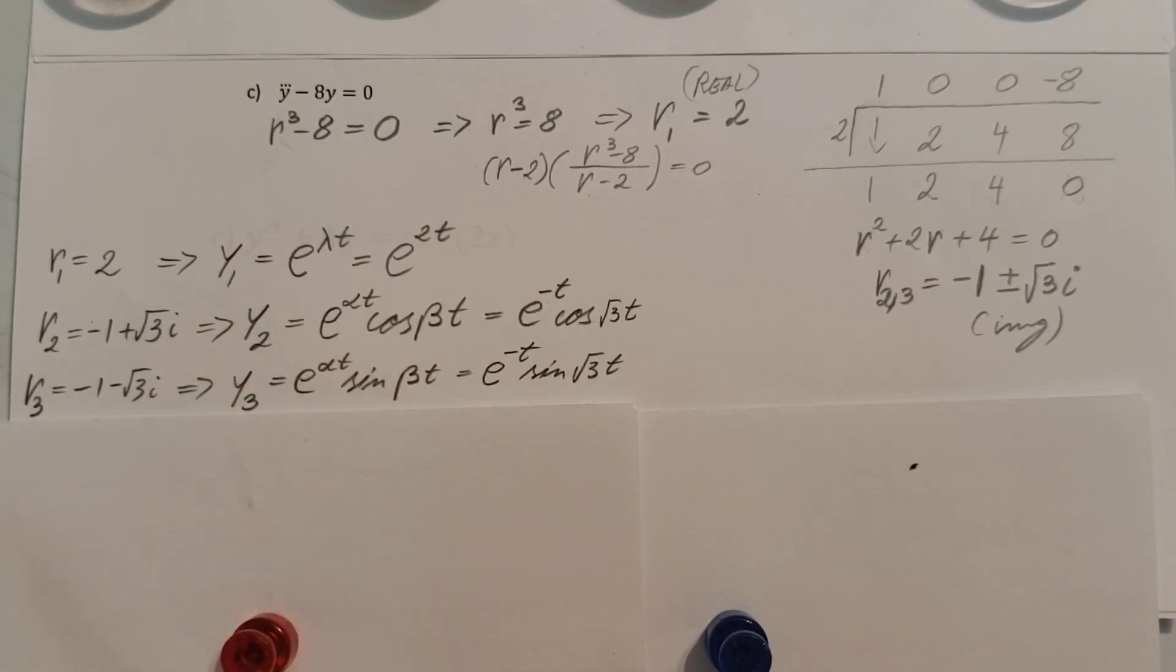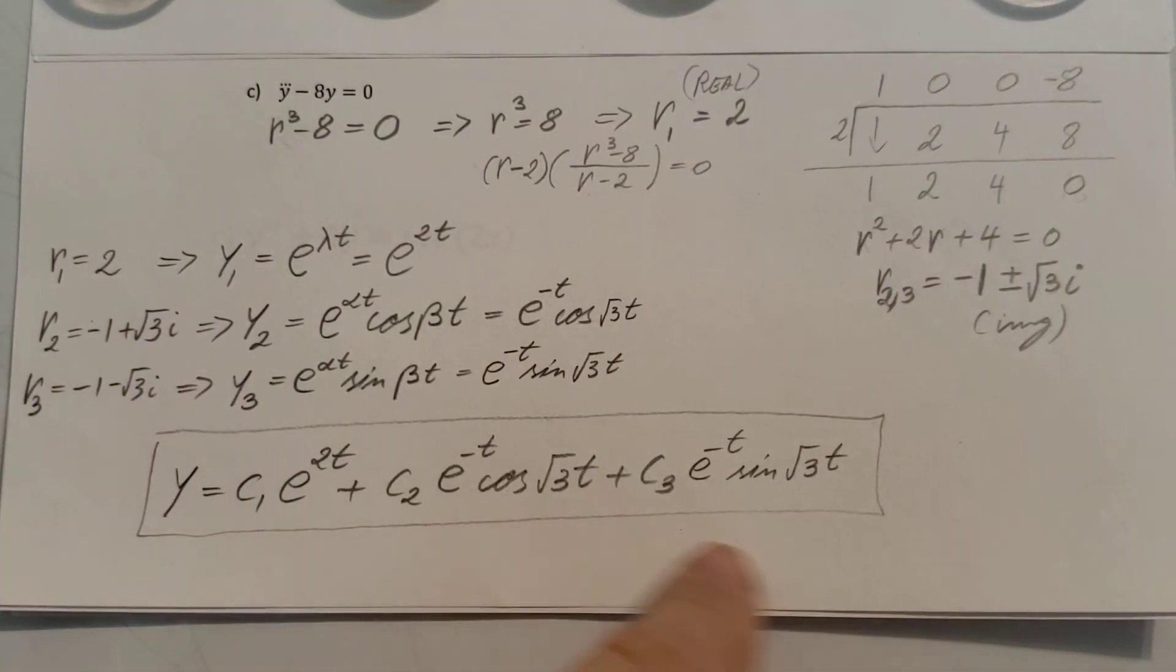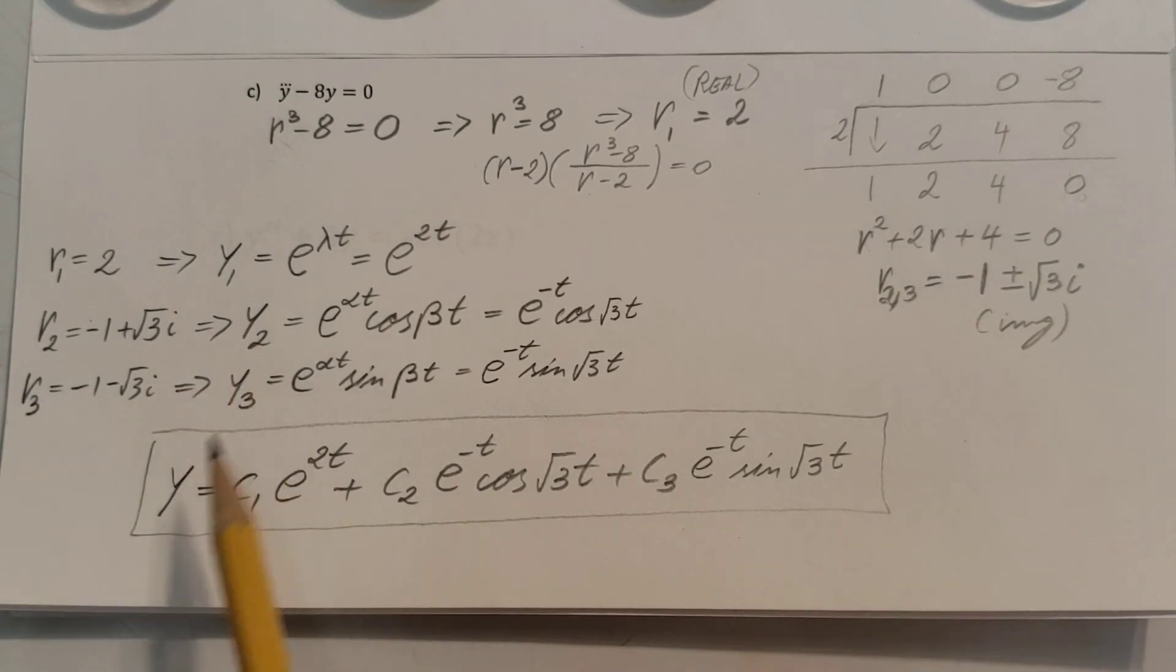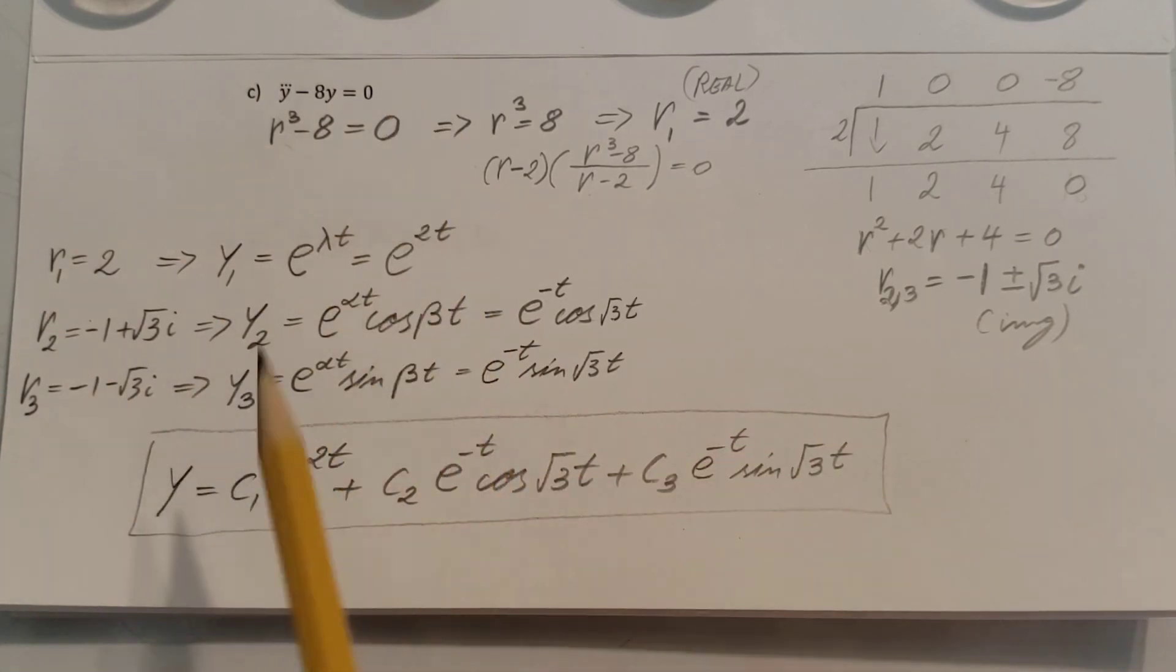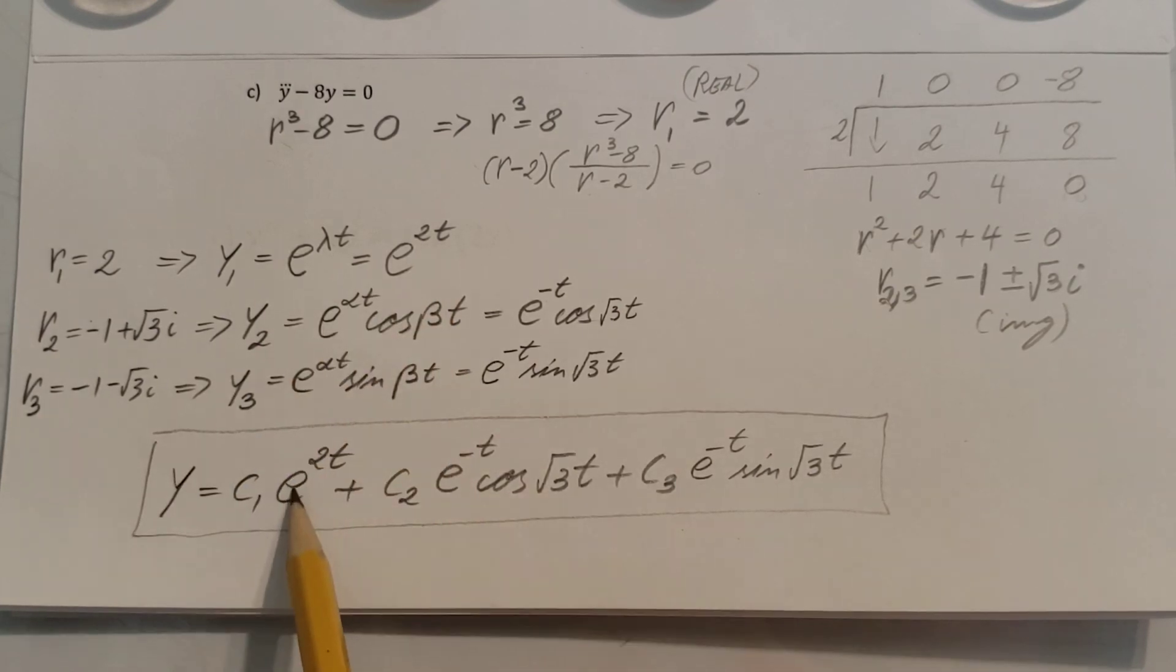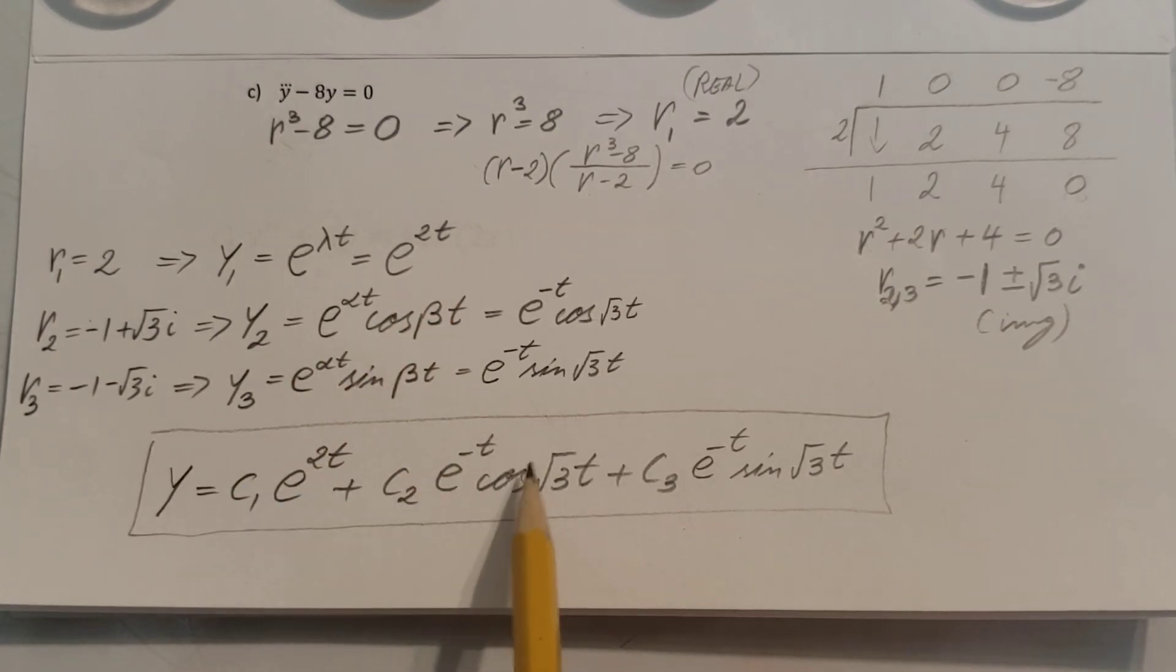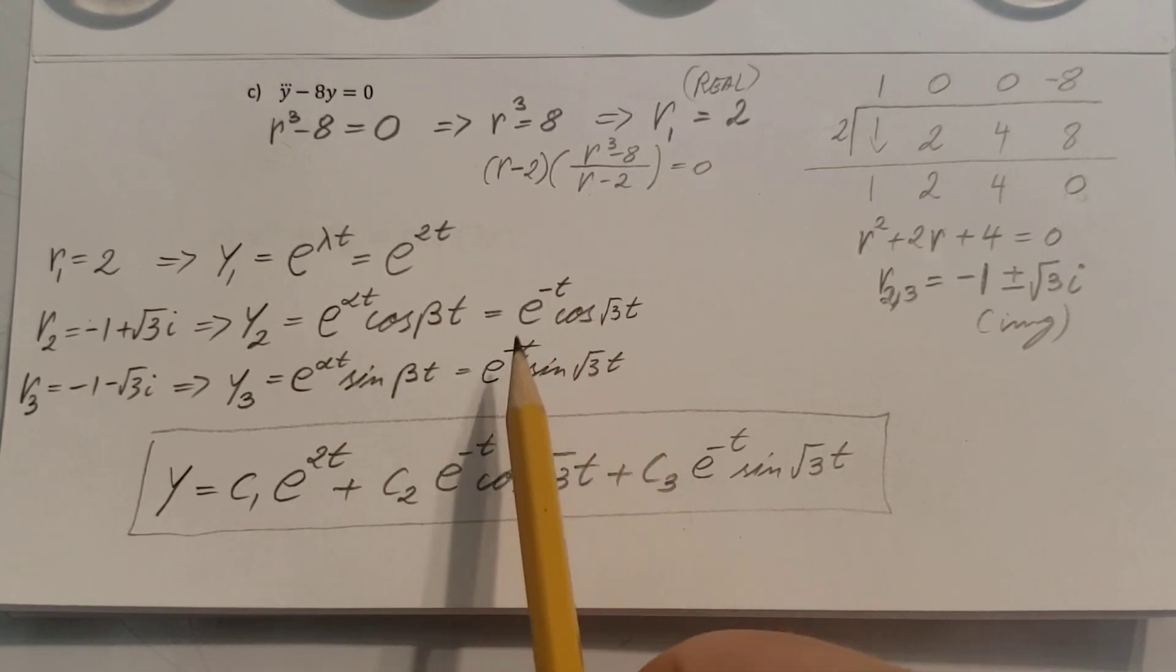Now we have solutions for all three of our roots, so all we have to do is write up our final answer, which is y equals y1 plus y2 plus y3, but make sure we don't forget our constants, right? So c1 times y1, right here, plus c2 times y2, and plus c3 times y3, and there you have it, that's the answer.